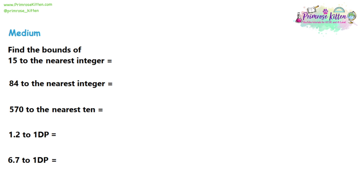Moving on to the medium question: it says just 'bounds', so we want to find both this time. We're rounding 15 to the nearest integer. Half of an integer — a whole one — would be 0.5. So we want plus or minus 0.5 from 15. The lower bound would be 0.5 below, which is 14.5, and the upper bound would be 0.5 above, which is 15.5. Those two numbers are the answers.